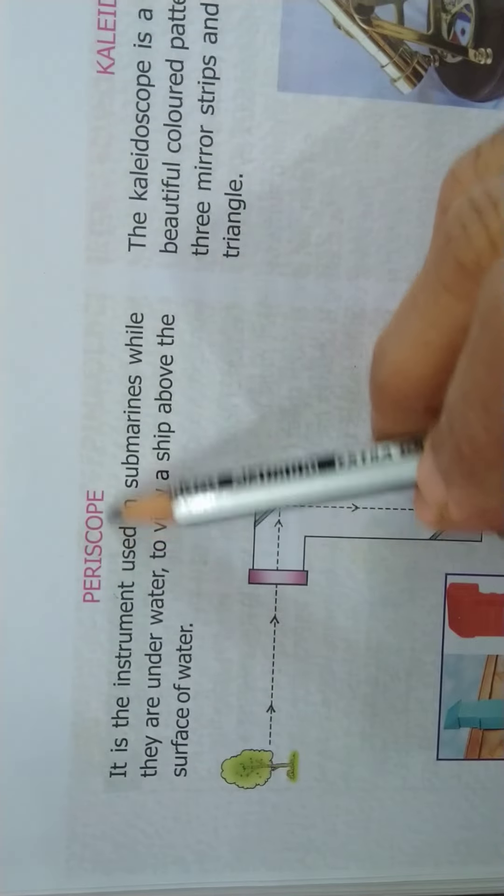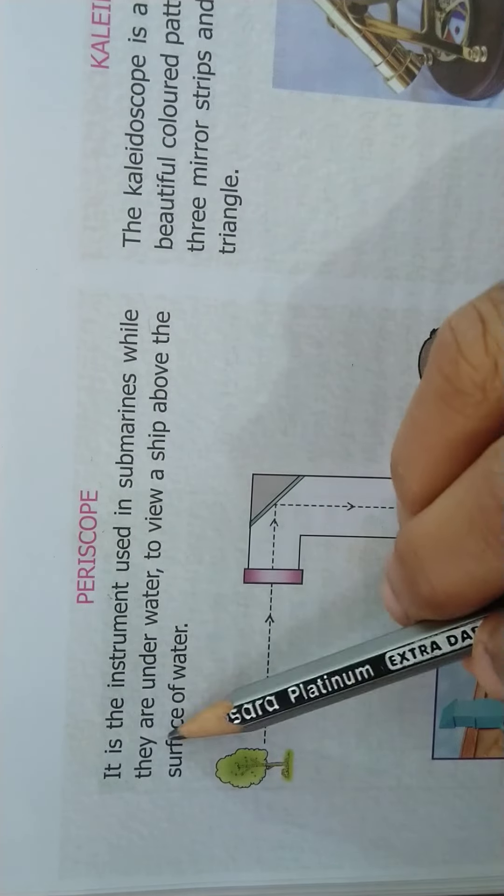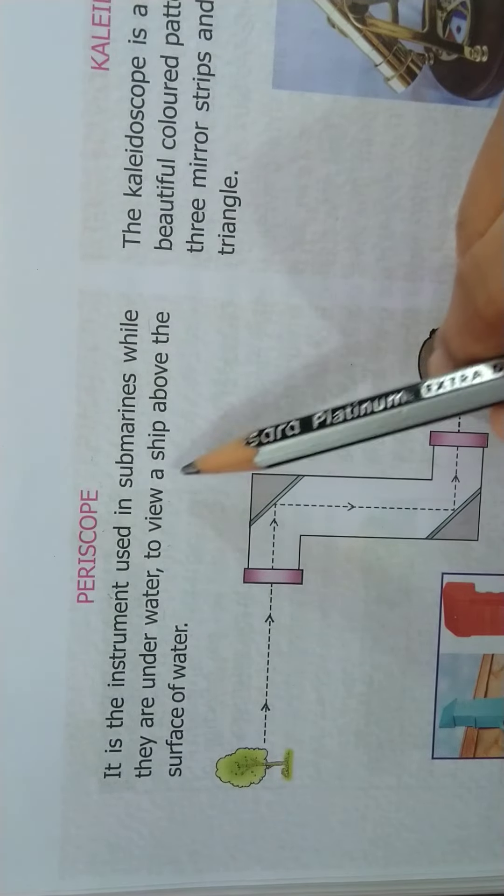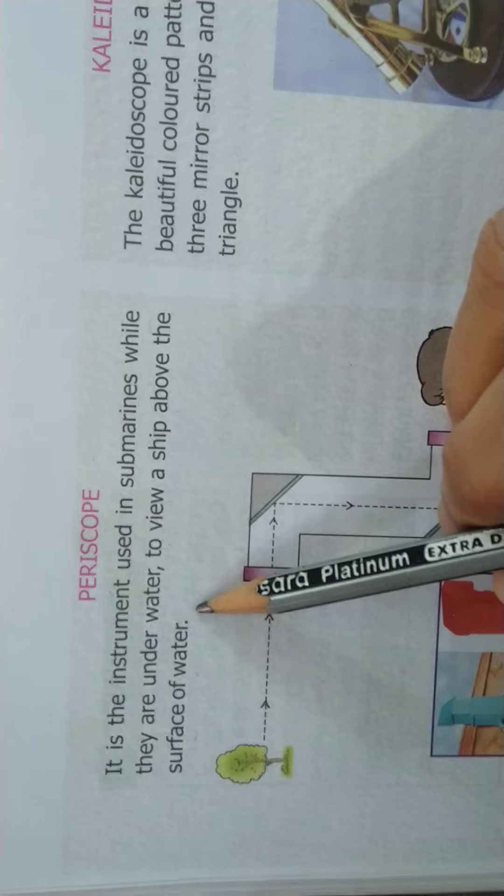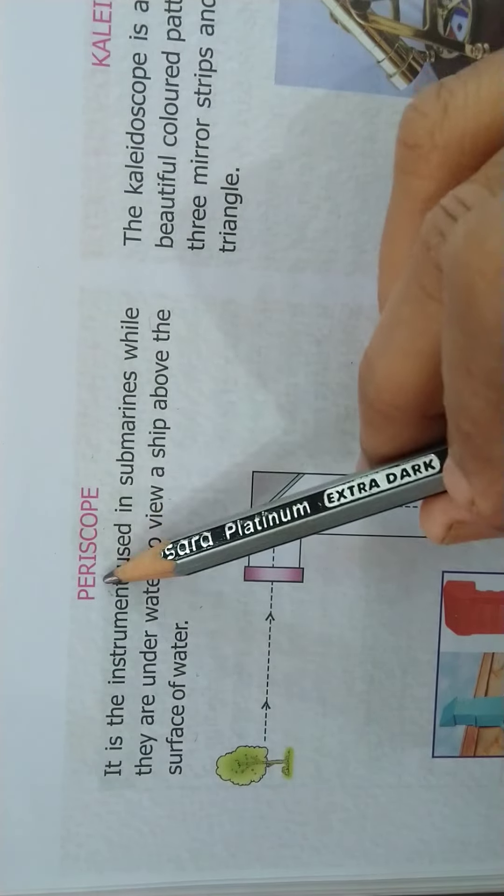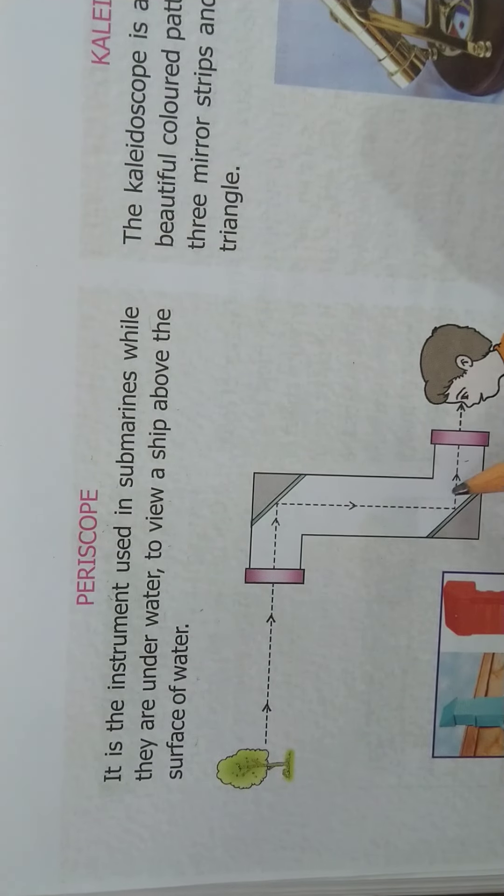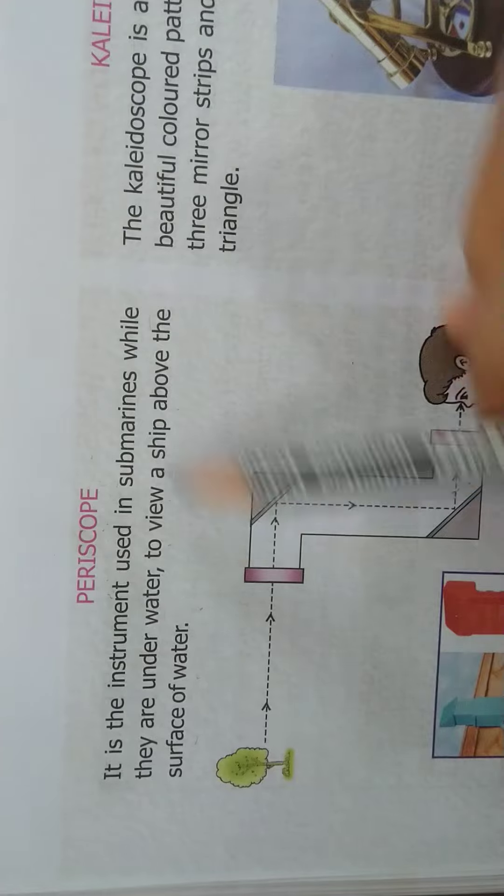Now next, this is P-E-R-I-S-C-O-P-E periscope. Periscope is the instrument used in submarines while they are underwater to view a ship above the surface of water. Submarines mein instrument hota hai periscope karke, jis se ki water ke surface ki chizhe hume neeche se dekhte hai. Pani ke andar se,